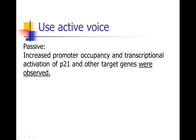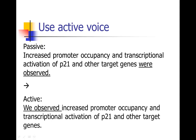Here's another example in the passive voice: Increased promoter occupancy and transcriptional activation of P21 and other target genes were observed. This is passive voice without a subject — we don't know who was doing the observing, though from context we can guess it was the authors of the paper. Turning this into the active voice: We observed increased promoter occupancy and transcriptional activation of P21 and other target genes. That's a much easier sentence to read, and just that small change makes a big difference in readability.